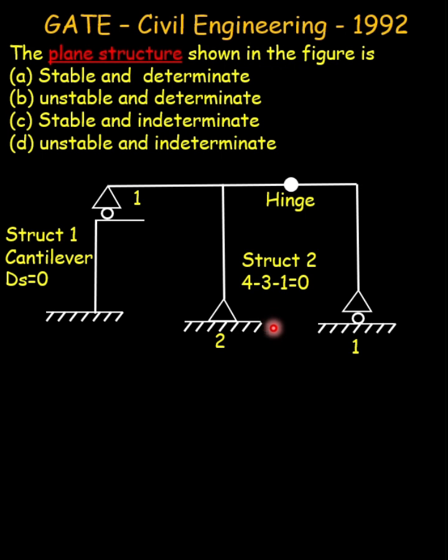So four minus three minus one equals zero, making the structure statically determinate and stable. Therefore, the correct option is (a). The same thing can also be obtained for structure two by using a formula.